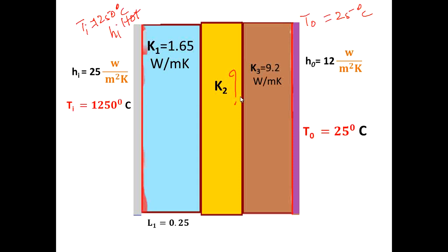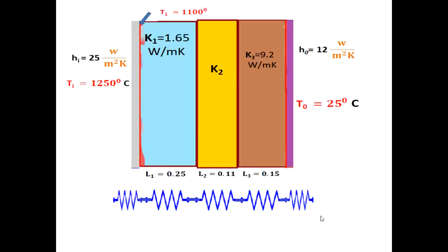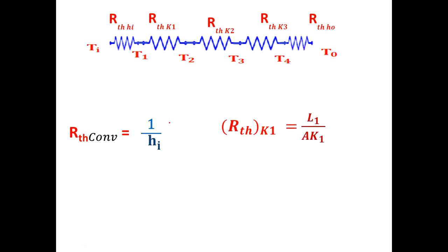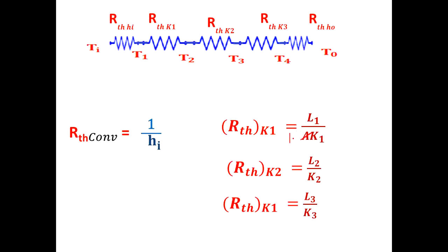The thermal resistance network has temperatures TI, T1, T2, T3, T4, and T0. In between, you have RHI, RK1, RK2, RK3, and RH0. In some books they use R1, R2, R3, but that causes confusion between convective and conductive resistances — so I use RHI and RH0 for clarity. RHI equals 1/HI, RK1 equals L1/K1, RK2 equals L2/K2, RK3 equals L3/K3, and RH0 equals 1/H0. Since A is 1 meter square, you can compute all convective and conductive resistances.